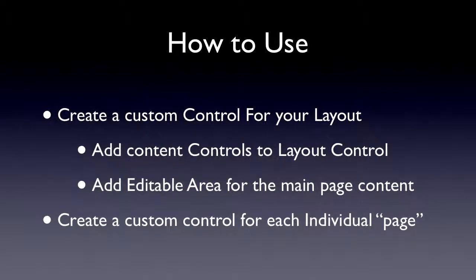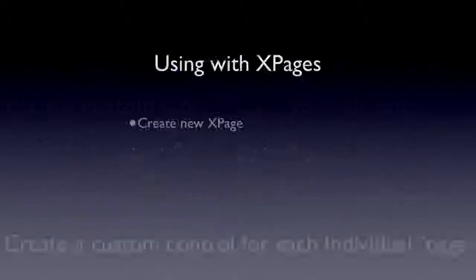So how do you use it? For a common layout and look-and-feel structure for your website, you want to create a custom control for your layout. That custom control is going to be made up of other custom controls — the header is its own custom control, the footer, the left sidebar, etc. Then on your master layout custom control, you add an embeddable area where the main page content will go. Each main page content is its own custom control. You'll see this in the demo in a minute.